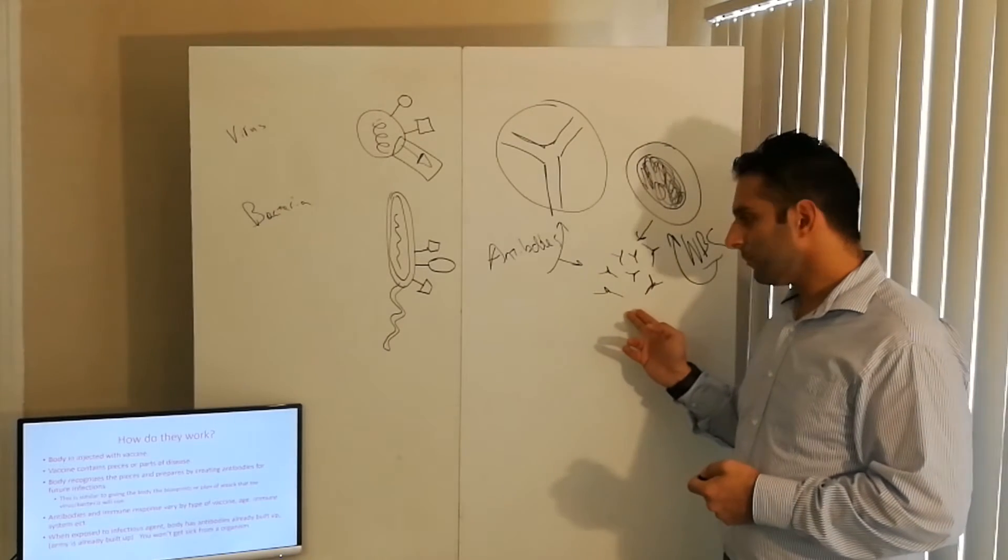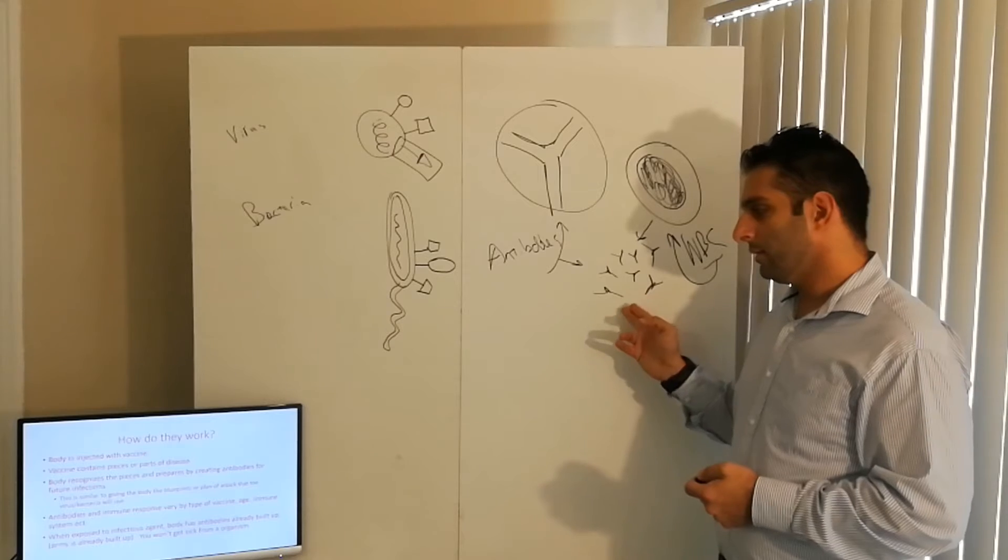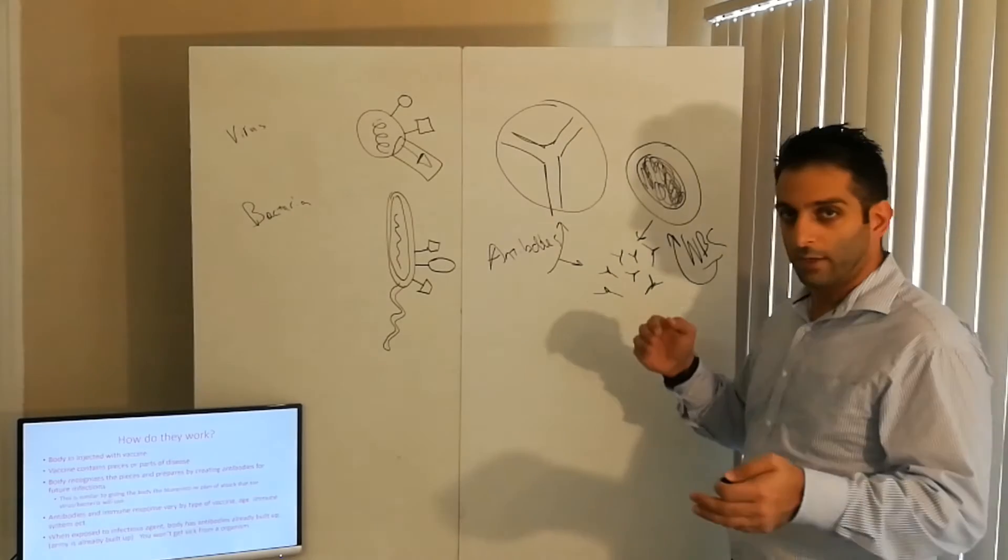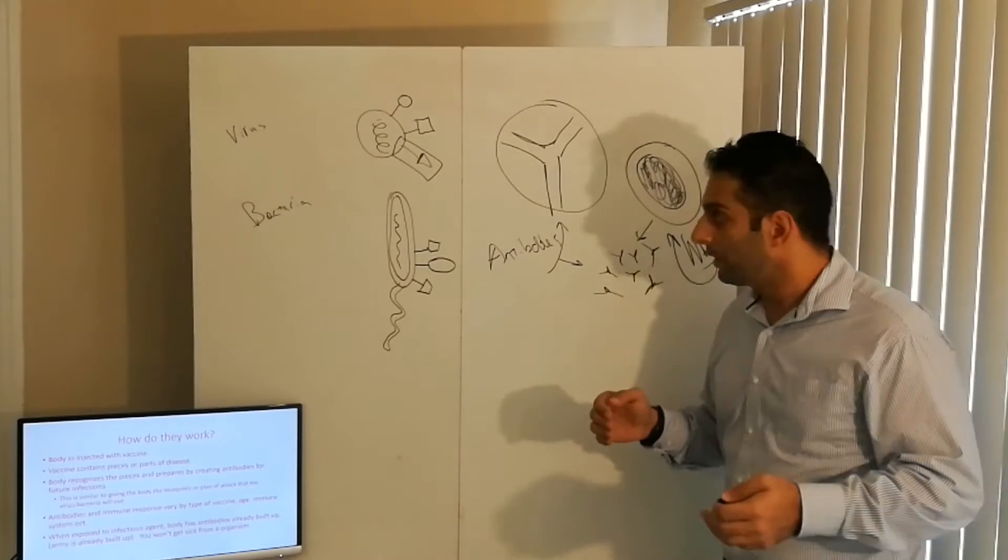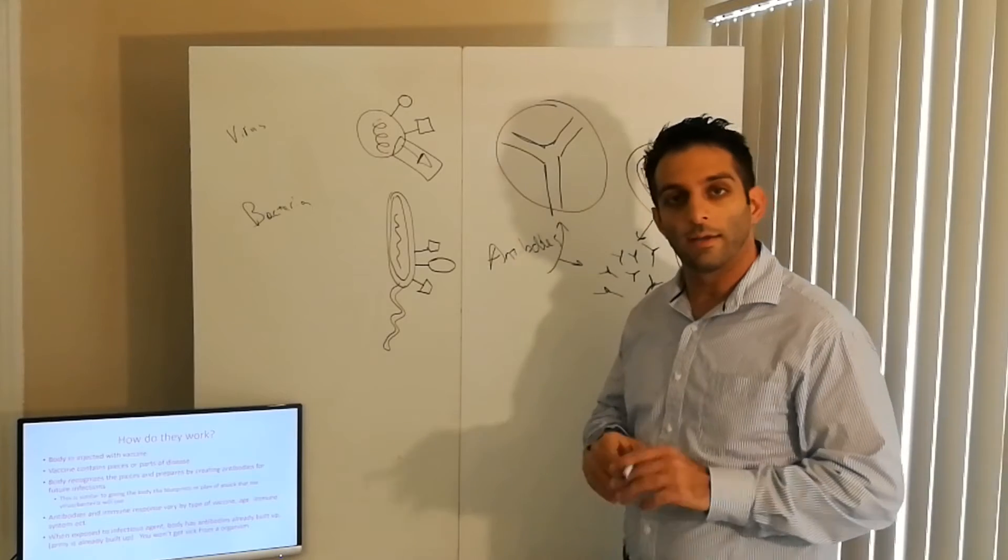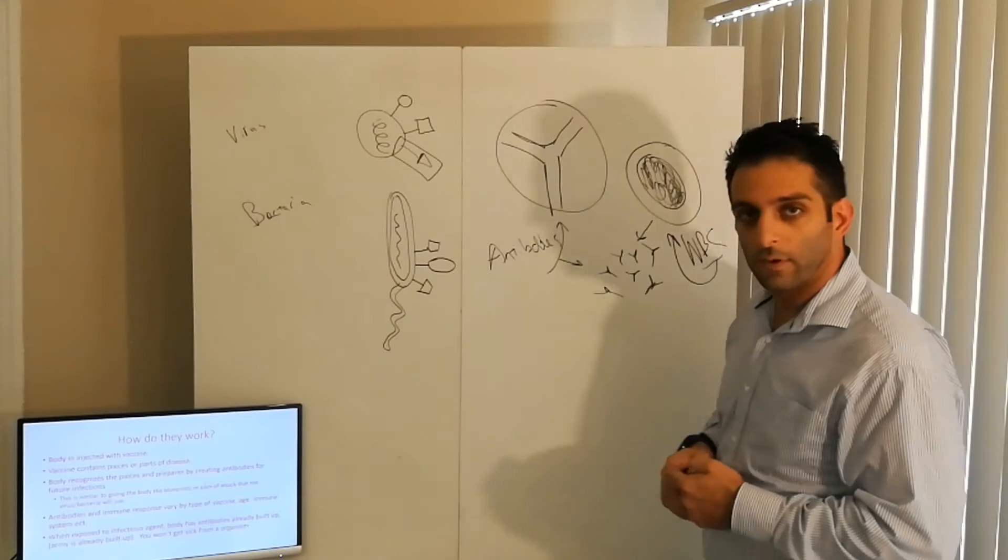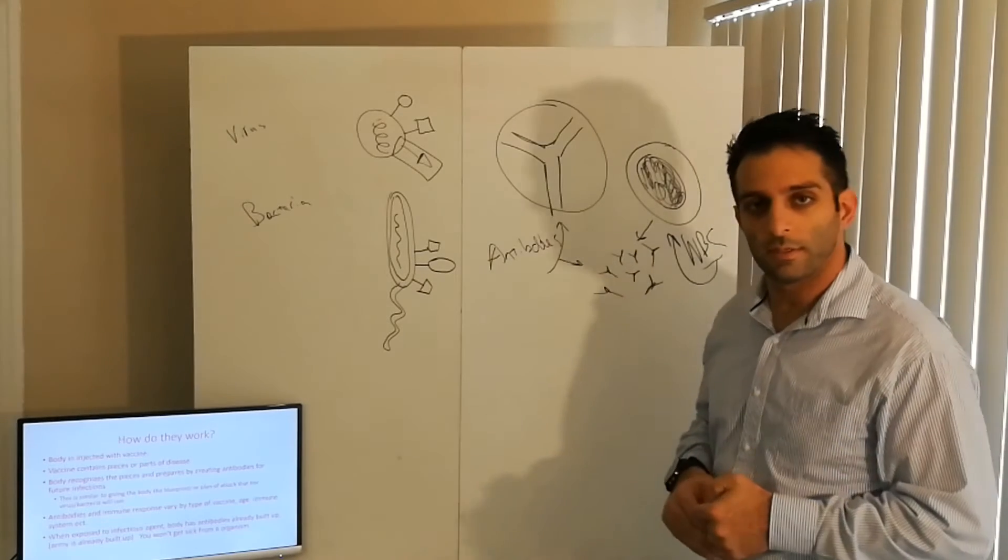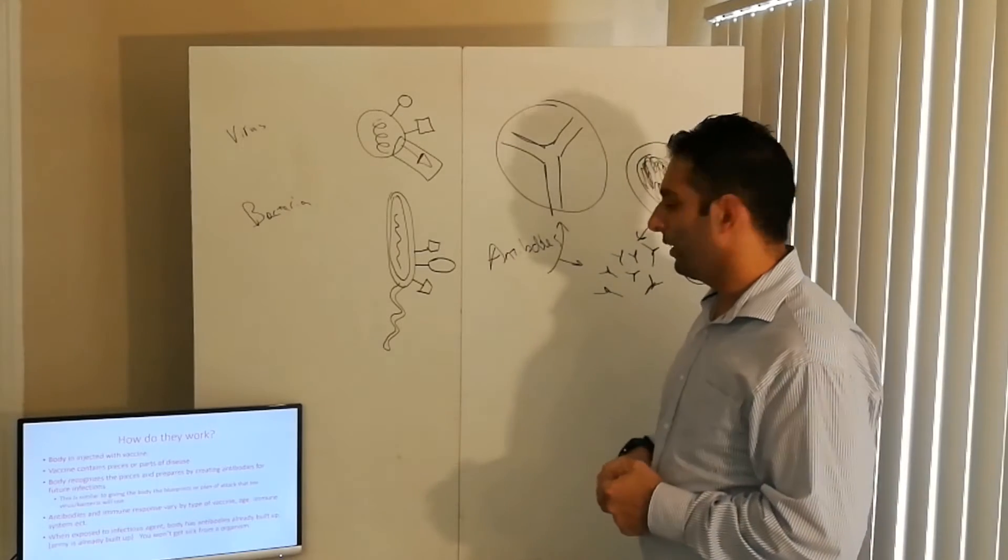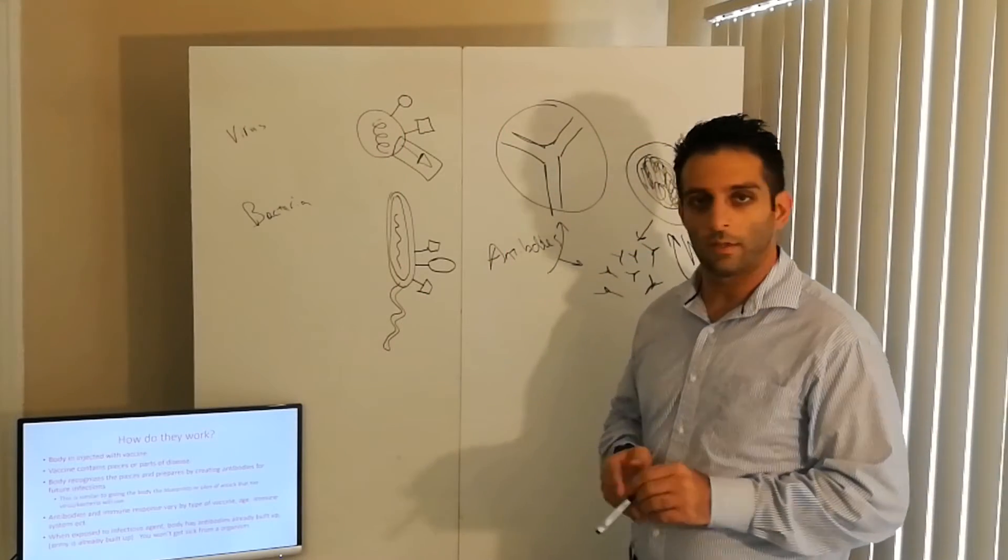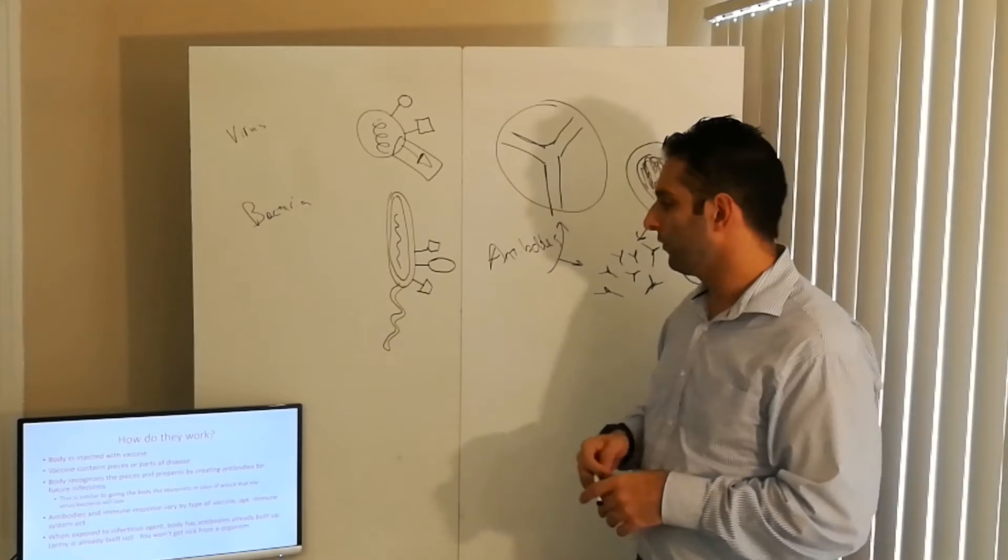Now, these antibodies are identical to the antibodies you would make if you actually got the disease. So, because the proteins we give you in the vaccine are identical to the proteins that you're going to get from the disease itself, your antibodies will be identical. So, antibodies are, like I said, very specific, the third, fourth bullet point.